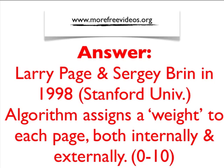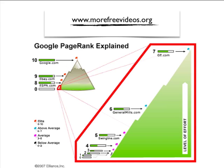That link from CNN is of high value, high trust, and high authority — all variables that Google looks at from a top-level view. That doesn't mean all links are equal. However, if you're getting a link from Bob's hardware store down the street and it's not related to you and not a highly valued site, that's not going to be as valuable.